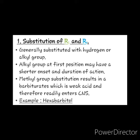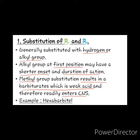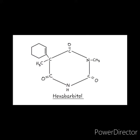Let us see substitution at R1 and R2. Generally, it is substituted with hydrogen or an alkyl group. An alkyl group at the 1st position may result in shorter onset and duration of action. A methyl group at the 1st position may result in a barbiturate which is a weak acid and therefore readily enters the CNS. The best example for this is hexabarbital, which contains a methyl group at the 1st position.